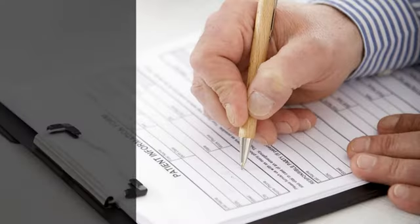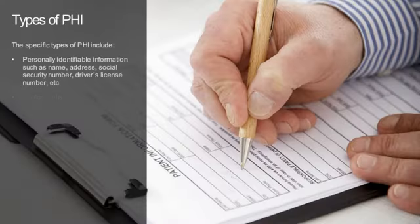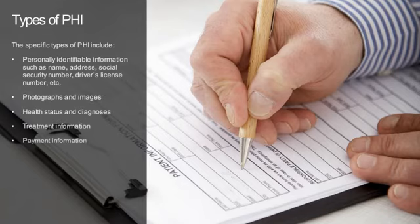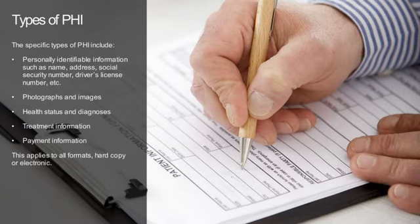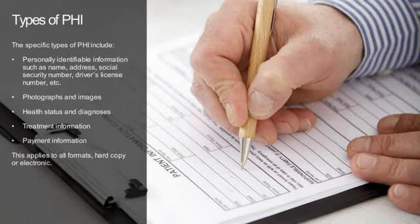The specific types of PHI covered under HIPAA's privacy rule are listed on screen. This list is not all-inclusive, however, so if you're in doubt, it's better to assume that all information related to patient health, treatment, or payments is confidential. Also keep in mind that in addition to requirements for covered entities, the privacy rule also defines patient rights.